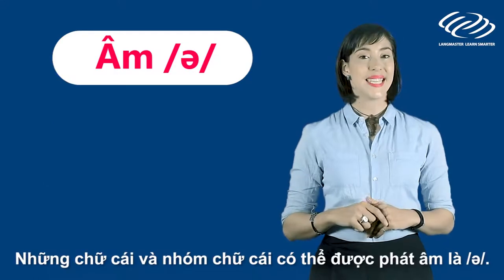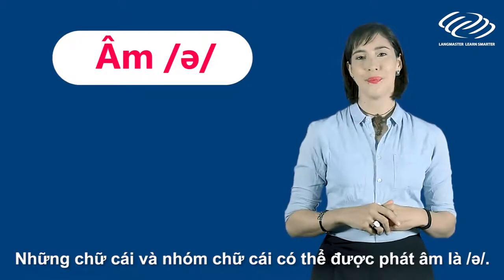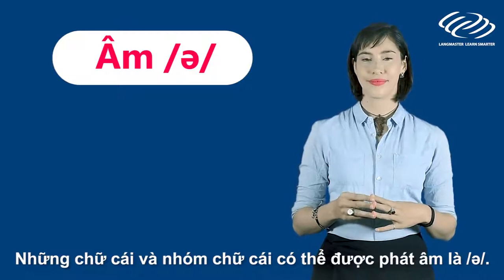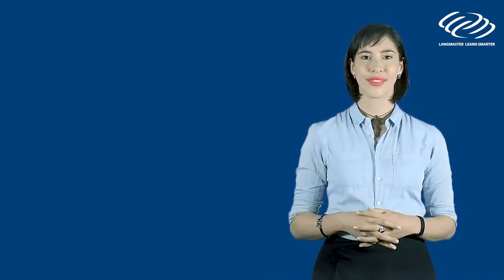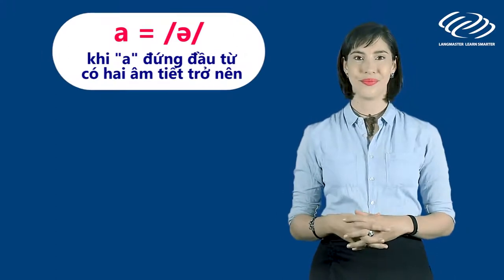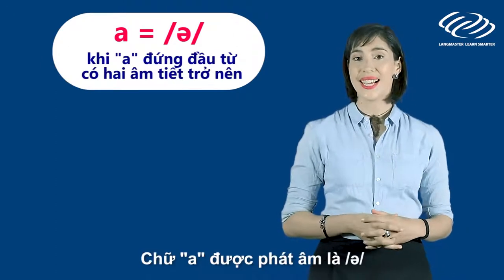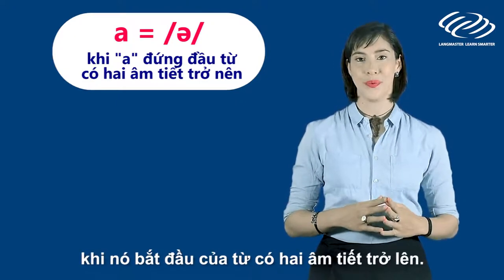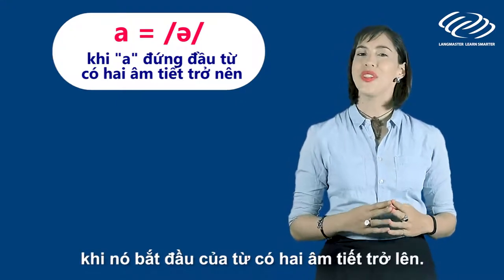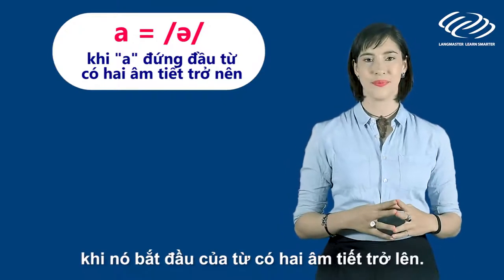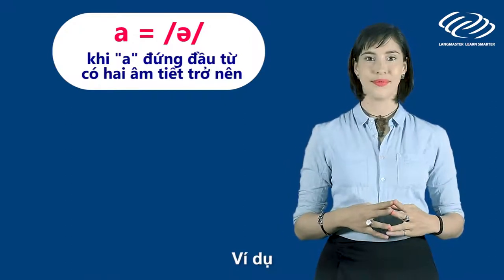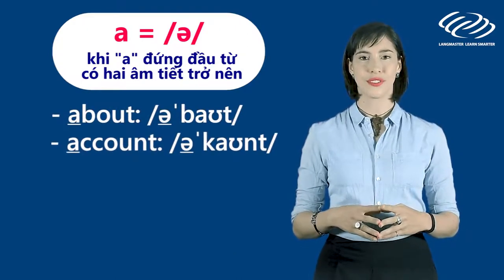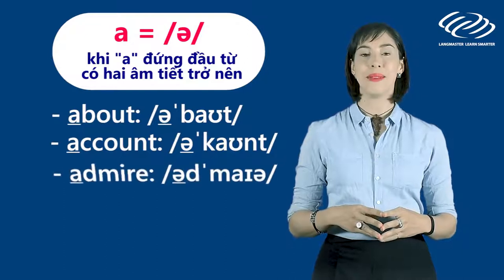The following letters and groups of letters are usually pronounced as 'uh'. The letter A. The letter A is pronounced as 'uh' when it is at the beginning of a word which has more than two syllables. For example: about, account, admire.